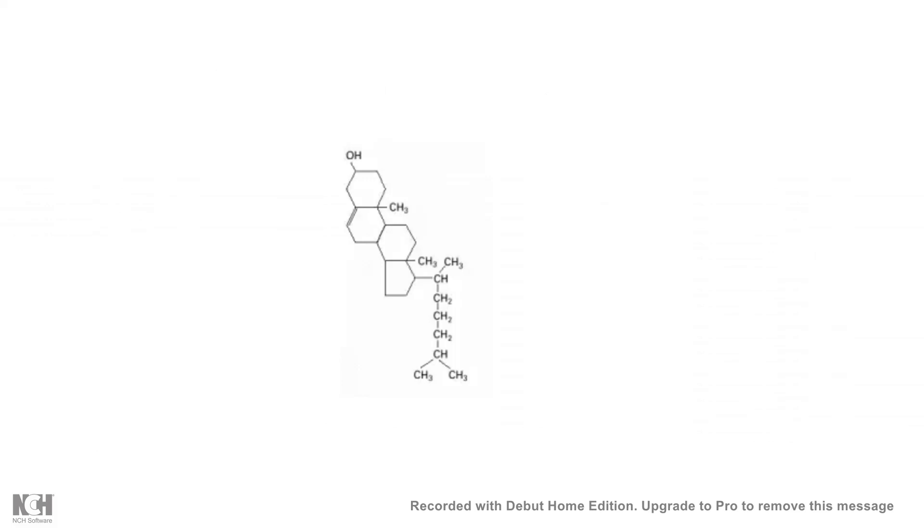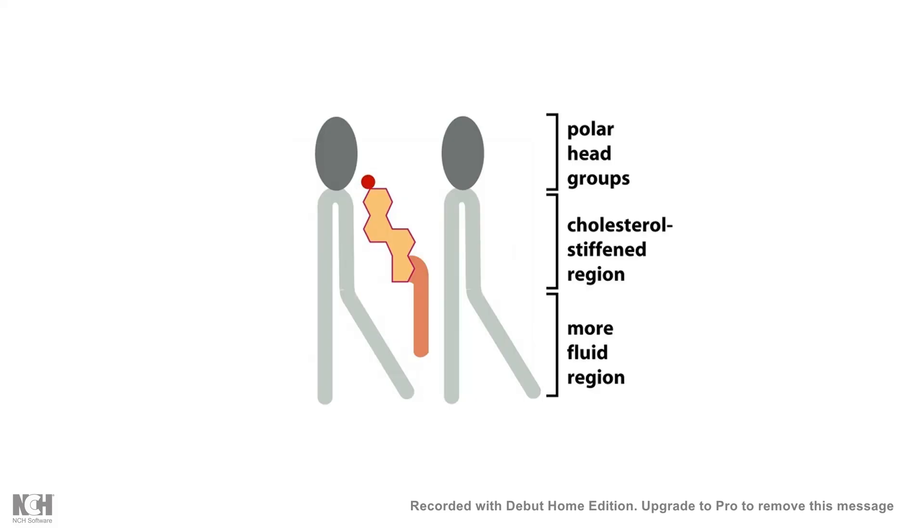Now, cholesterol has key parts. It has a non-polar hydrocarbon tail. It has a rigid steroid structure and a polar group. So it can easily fit in between the bilayer, in between the phospholipid residues. Now, the phospholipid residues are kind of glued by cholesterol and thereby their movement is kind of restricted.